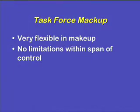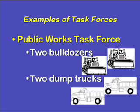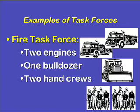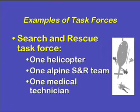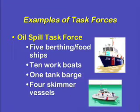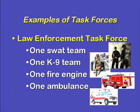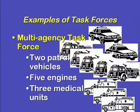Listed are some examples of how agencies may organize task forces. A public works task force might be two bulldozers and two dump trucks. A fire task force may be two engines, a bulldozer, and two hand crews. A search and rescue task force might be one helicopter, one alpine search and rescue team, and one medical technician. An oil spill task force might be five boom ships, ten work boats, one tank barge, and four skimming vessels. A law enforcement task force would be one SWAT team, one K-9, one fire engine, and one ambulance. A multi-agency task force might be two patrol vehicles, five engines, and three medical units.